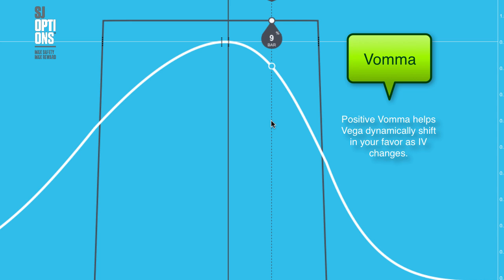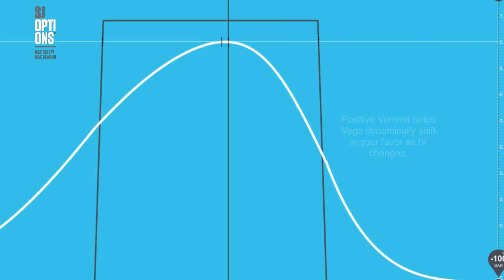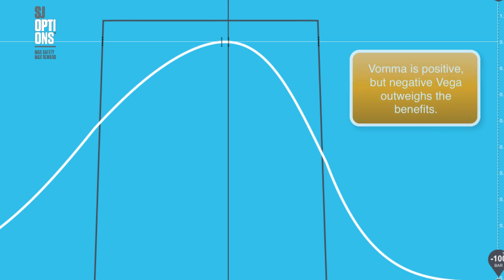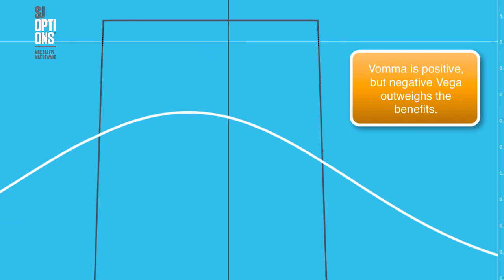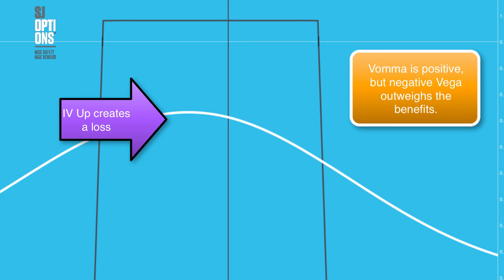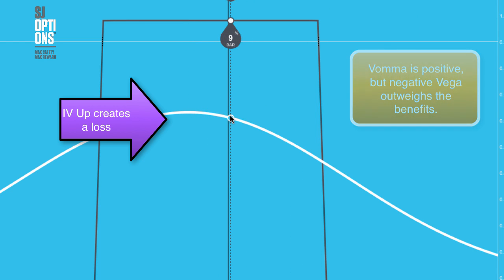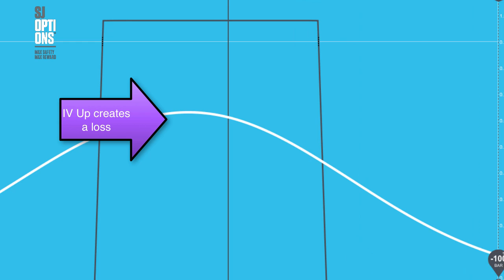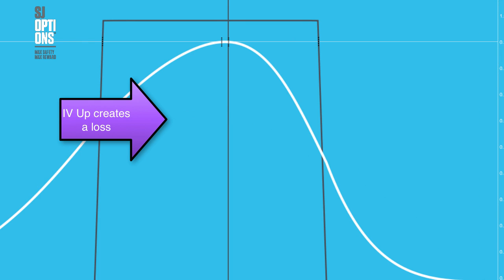Even though this trade has a positive vomma, the negative vega is still very strong. So even though you may have a positive vomma in this case, as the volatility increases the vomma is not strong enough to prevent the trade from losing due to the negative vega position. So as volatility increases, we still have a loss even though the vomma is positive.